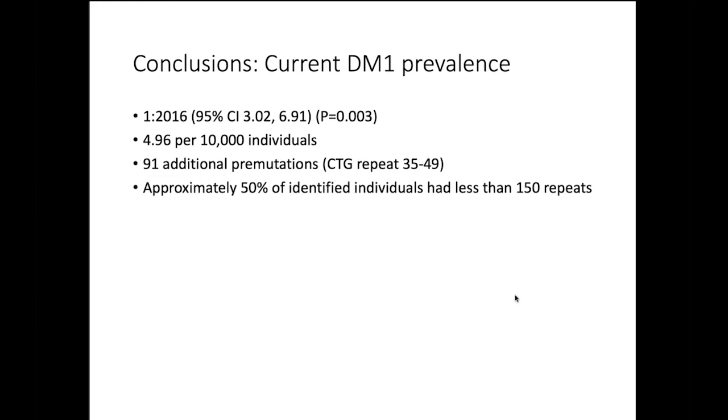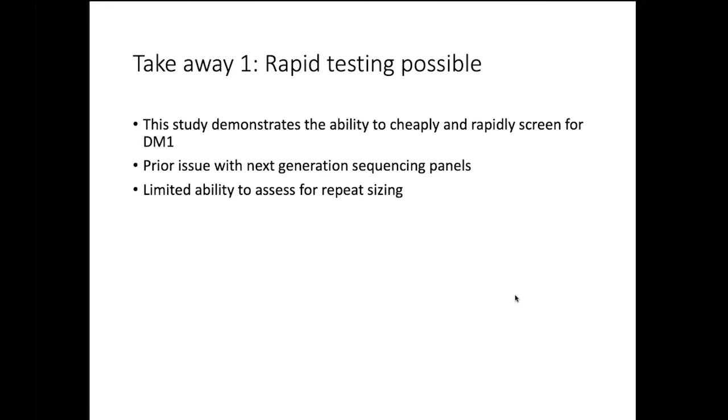So, the conclusion here is that the current myotonic dystrophy type 1 prevalence is about 1 in 2000, or 1 in 2016, if you want to be precise from the numbers, but really just exactly, almost exactly at 1 in 2000, or about 5 per every 10,000 individuals. But there's about triple the number of pre-mutations. And approximately 50% of identified individuals had less than 150 repeats.